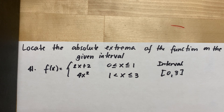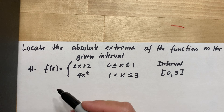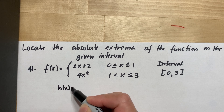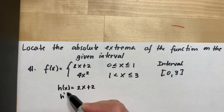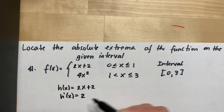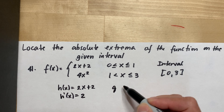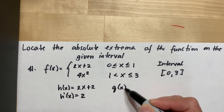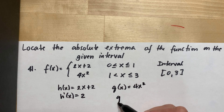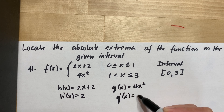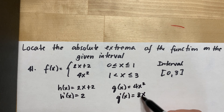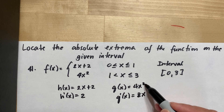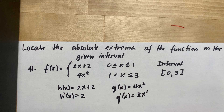Now let's get the derivative of each function. The first function, call it h(x), is 2x plus 2, so its derivative is equal to 2. The second function, g(x), is 4x squared, so its derivative is equal to 8x — since 4 multiplied by 2 is 8, then you subtract 1 from the exponent, giving x to the first power.